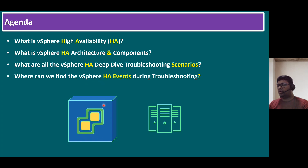We have the vSphere icon, and within vSphere, while creation of a cluster, one of the key features is High Availability. While creation of cluster only, we can find that one of the cluster features is High Availability — in short form, HA.